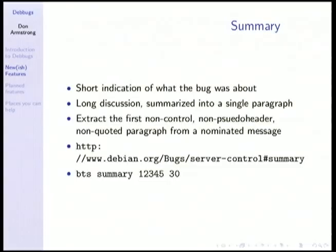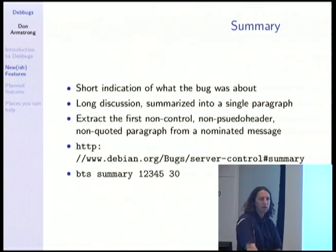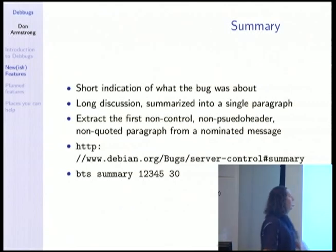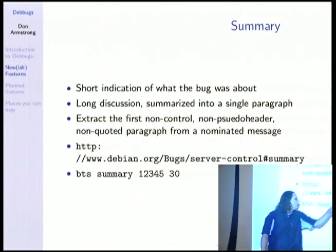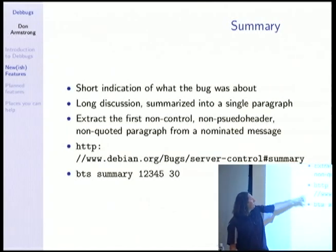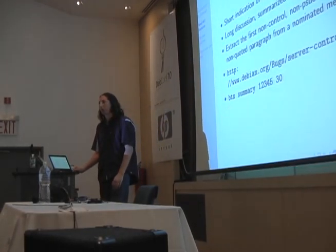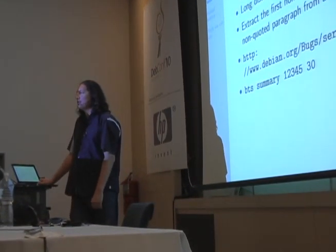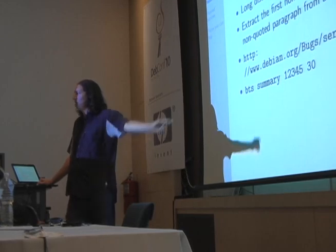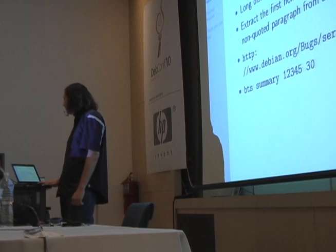The other neat thing that I don't think anybody is using, or hardly anybody is using, is summary. This is useful when you have long bug reports with hundreds of messages sent to the log and you don't want to go through and figure out what exactly has gone on. You send a new message to the BTS and indicate that you want to make a summary out of it. This allows you to select a summary for a bug from a specific message in the BTS. It extracts the first non-control, non-pseudo-header, non-quoted paragraph from the message you nominate. There is also an option where you can write up a message and at the top put a pseudo-header to make it the summary so you don't have to send a second command later — it should be in the documentation.